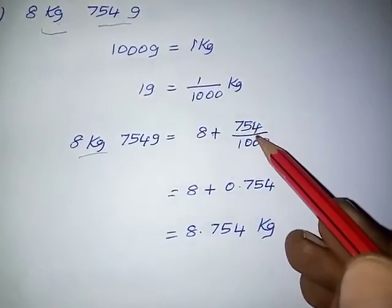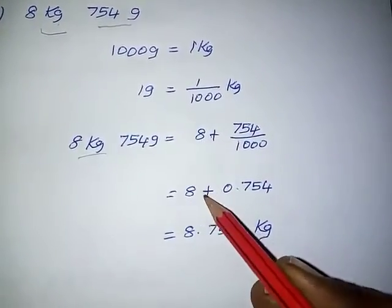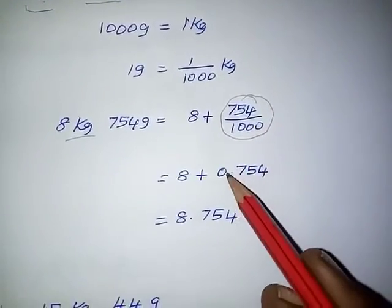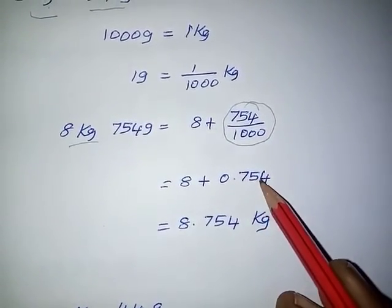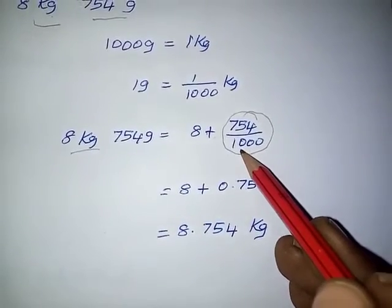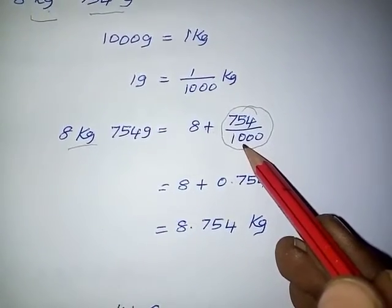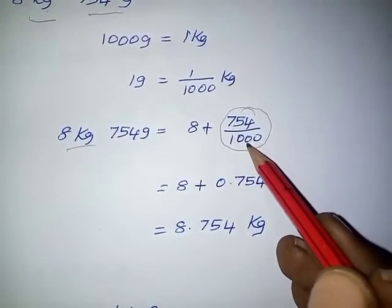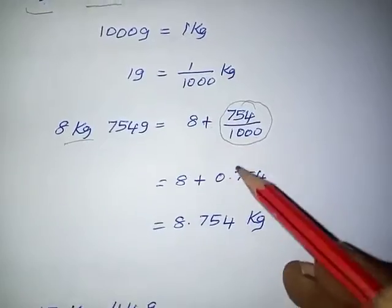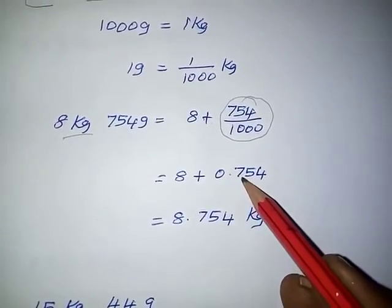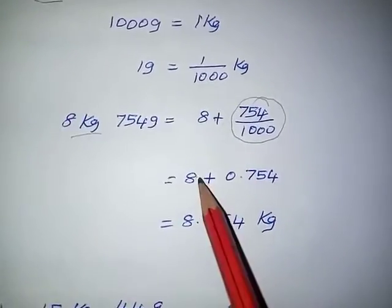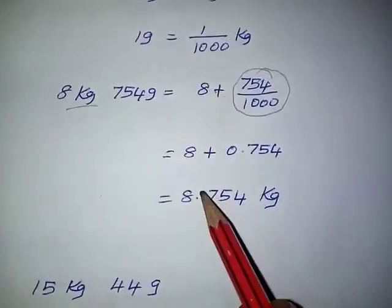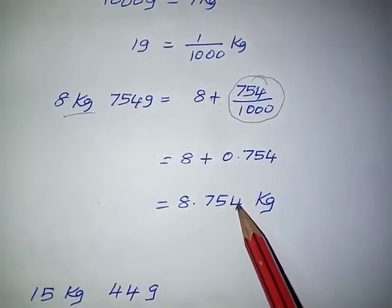So 8 plus 754 by 1000. This decimal part can be written as 0.754, because according to the decimal place value, the place value ending with tens, hundreds, thousands — we write 0.754. Joining together: 8 plus 0.754 gives us 8.754 kg.